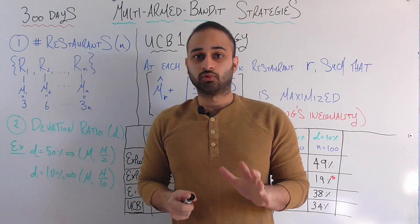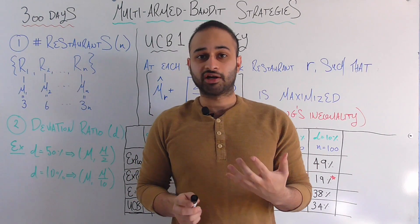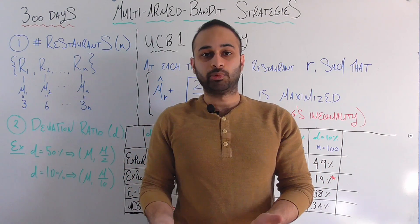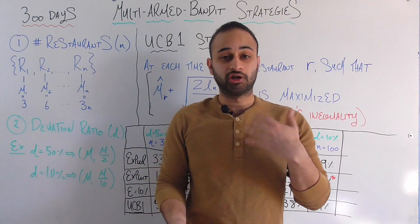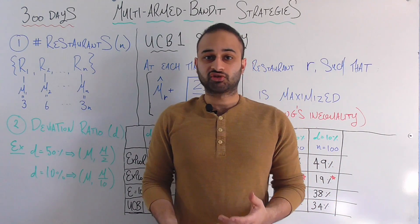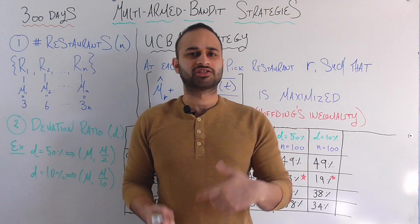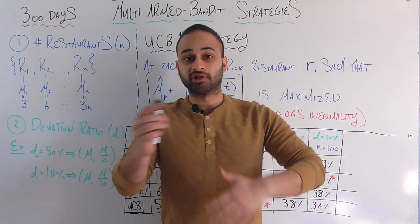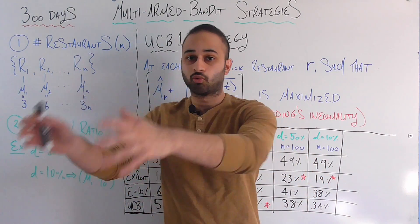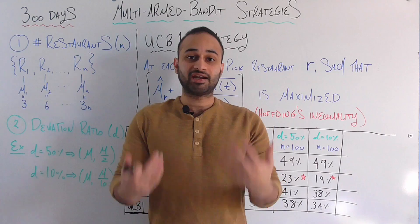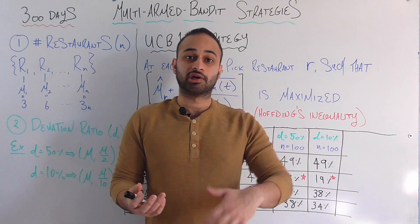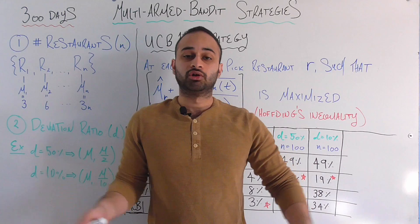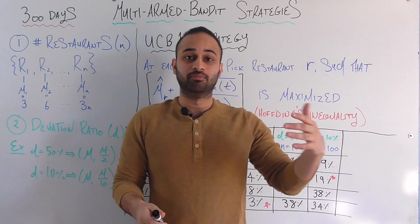Now we'll look at one more strategy that adds a very necessary layer on top of the Epsilon Greedy strategy we finished on in the last video. Just to reiterate: the Epsilon Greedy strategy sets some small value epsilon, say 10%. On any given day, there's a 10% chance you randomly explore one of the restaurants, and a 90% chance you exploit your current knowledge — going to the restaurant with the best mean so far based on your history of visits.